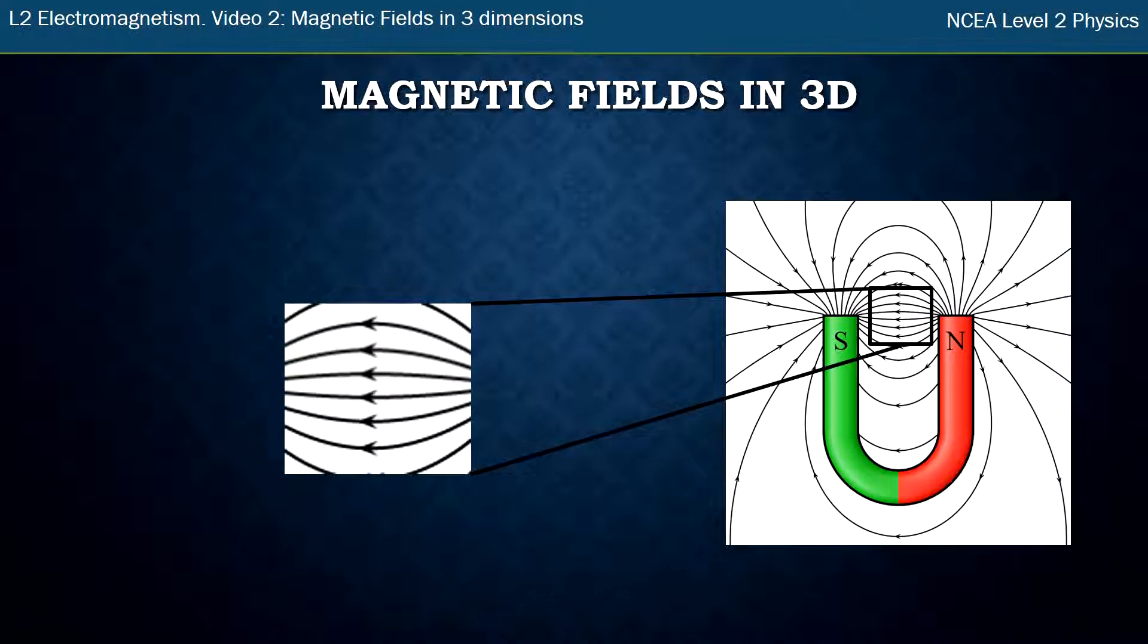Now if I just zoom in on that, you can see most of them are going towards the left. That's pretty easy to draw if you want to draw a field to the left or to the right, or even up or down on the page, because the page is two dimensions, so you can deal with up, down, left, and right.